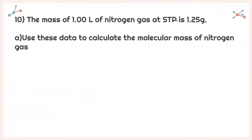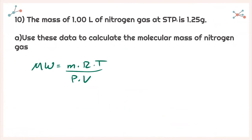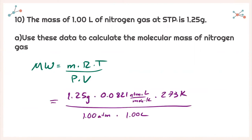For the last problem, part A: the mass of 1.00 liters of nitrogen gas at STP is 1.25 grams. Use the data to calculate the molecular mass of nitrogen gas. Using molecular weight equals mass times R times temperature divided by pressure times volume, at STP temperature is 273 Kelvin and pressure is 1 atmosphere. Plugging in all values, I get a molecular weight of 28.0 grams per mole.